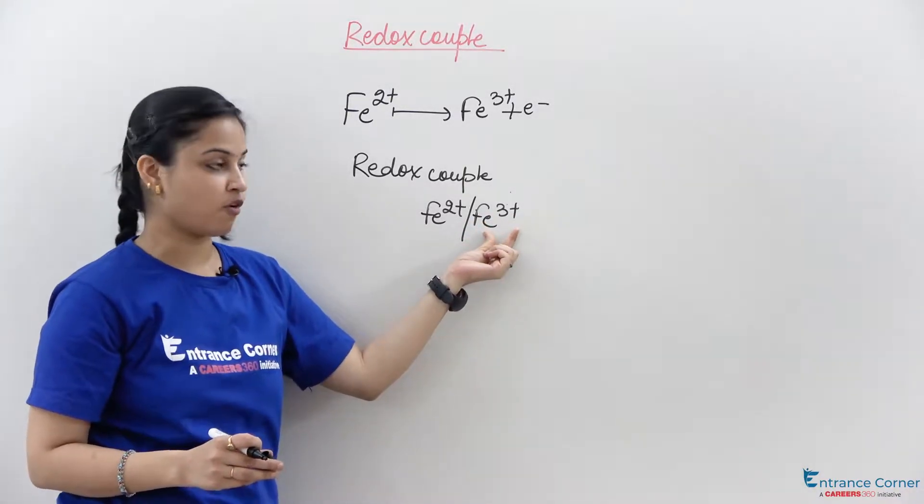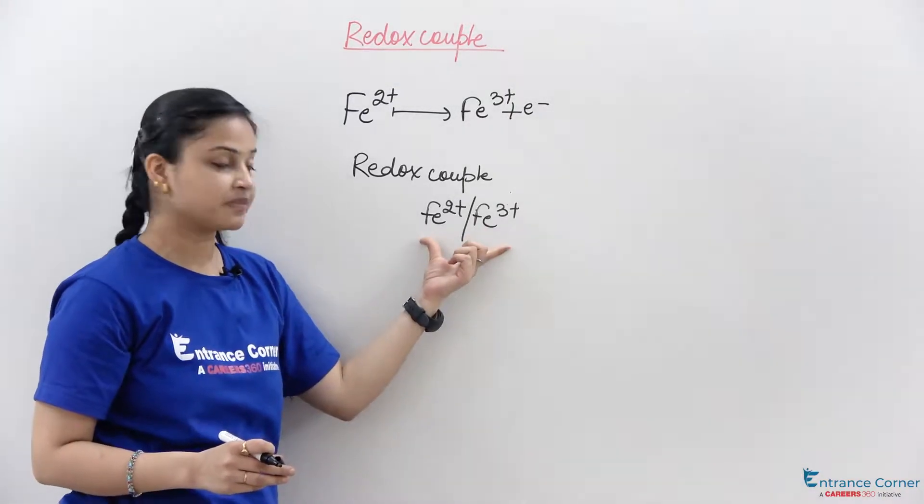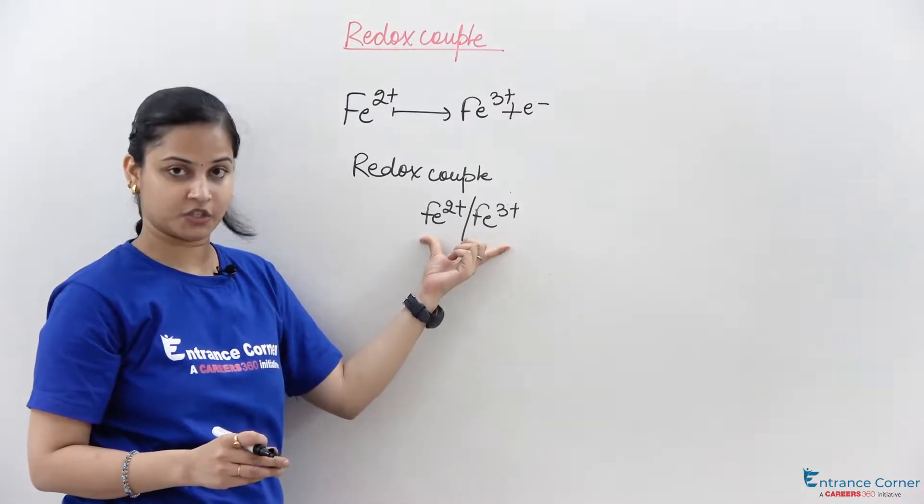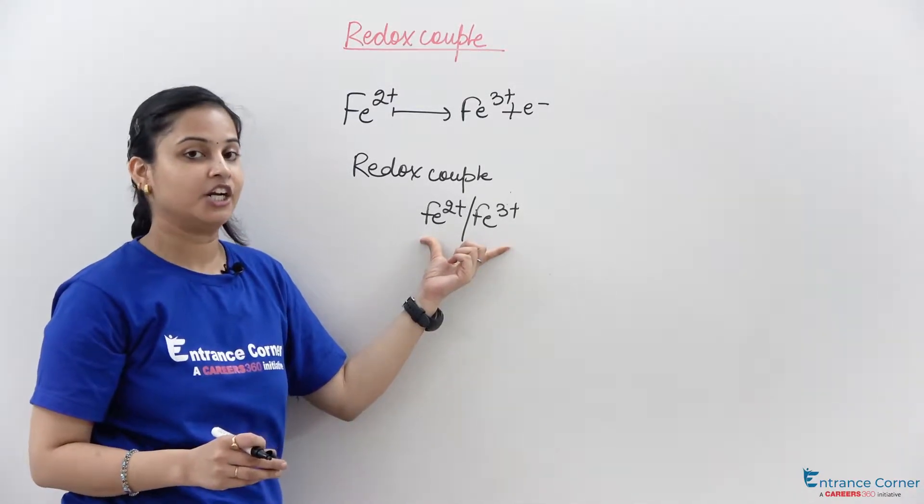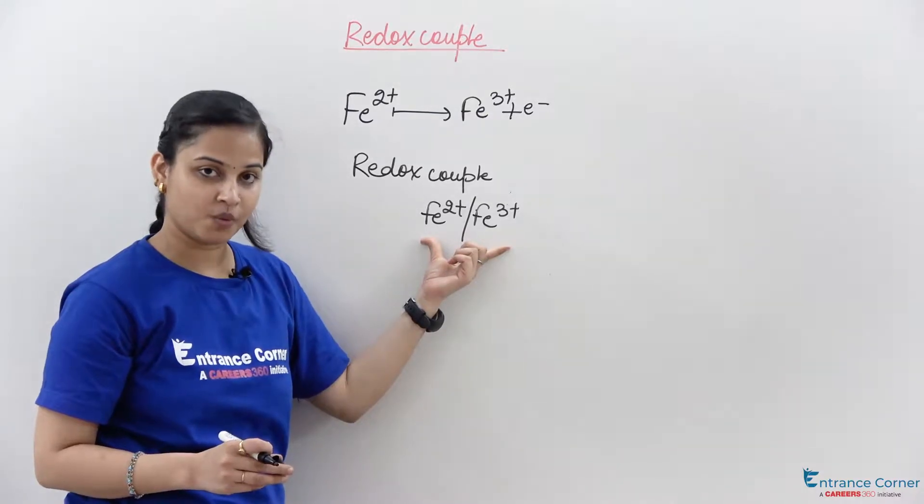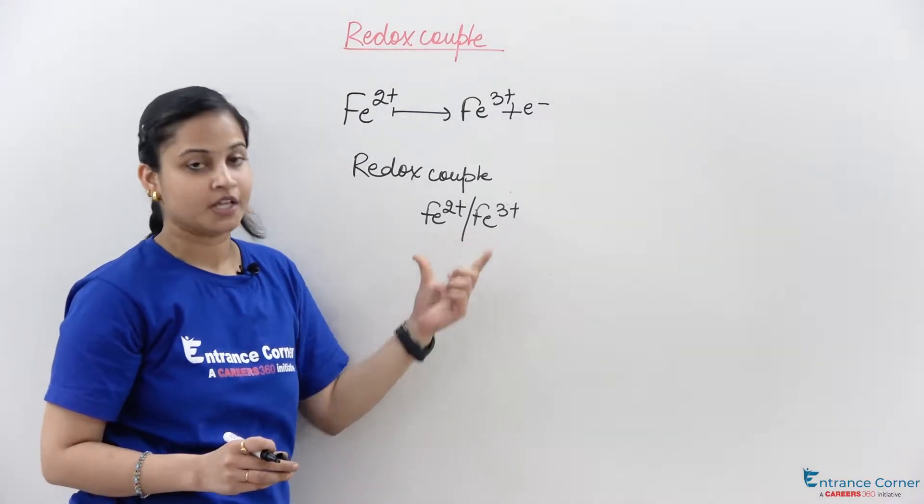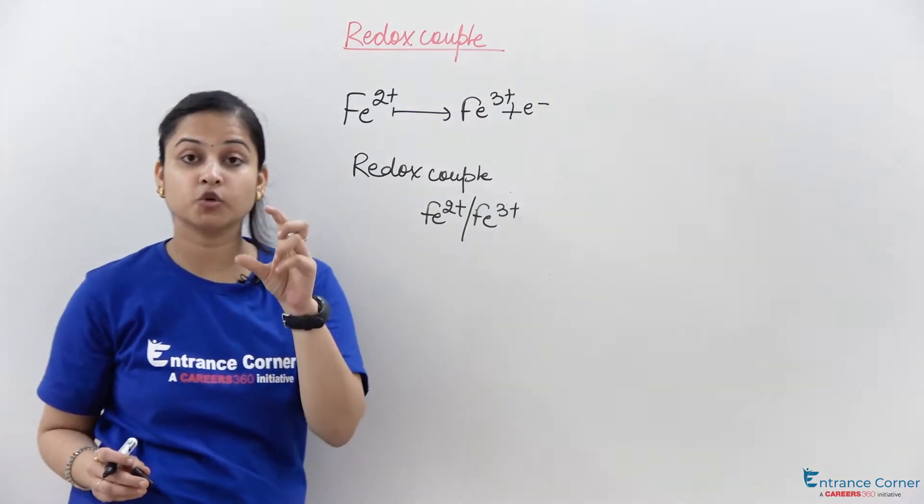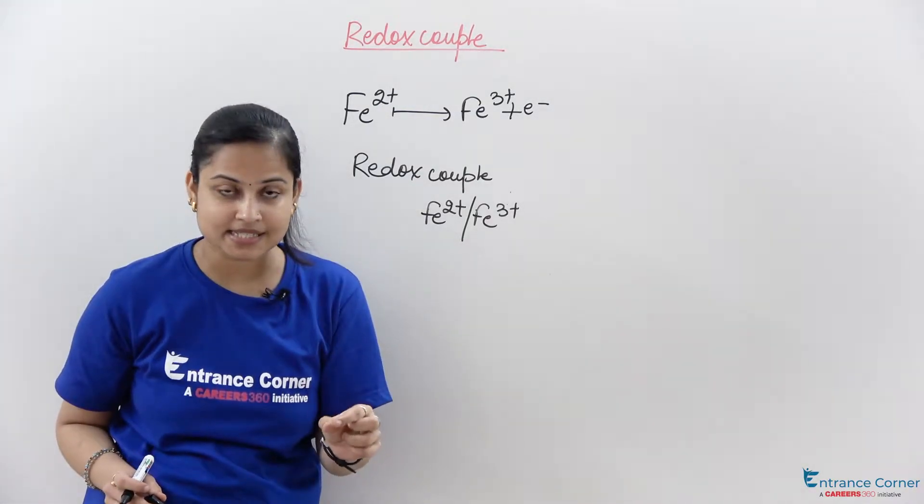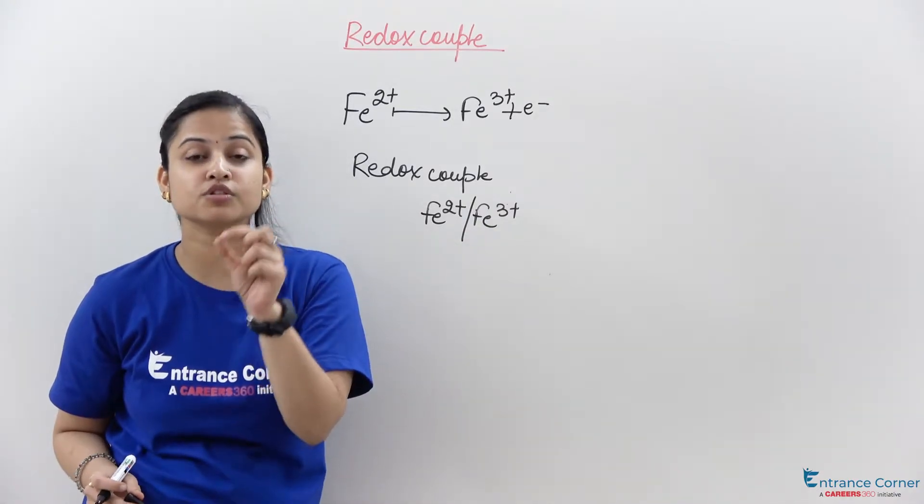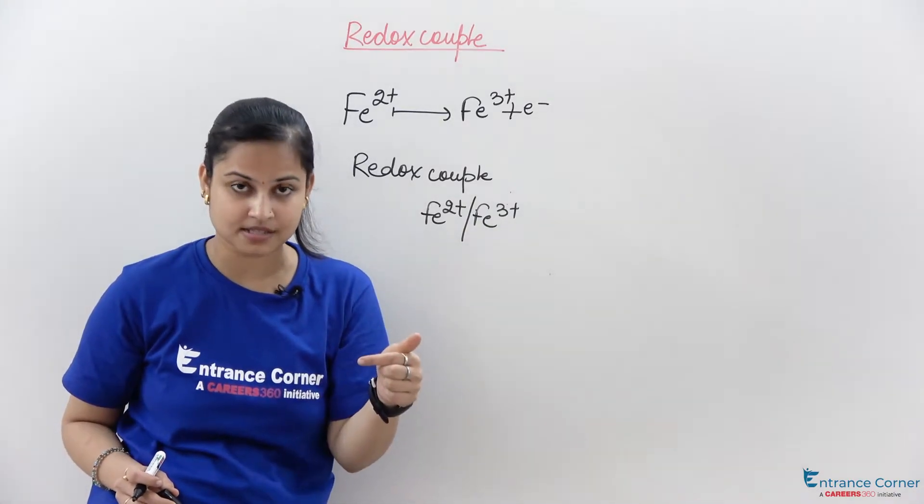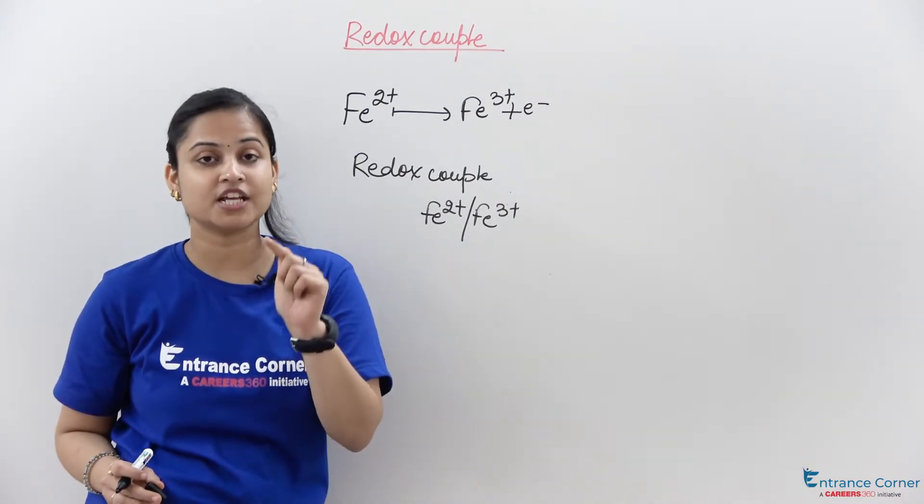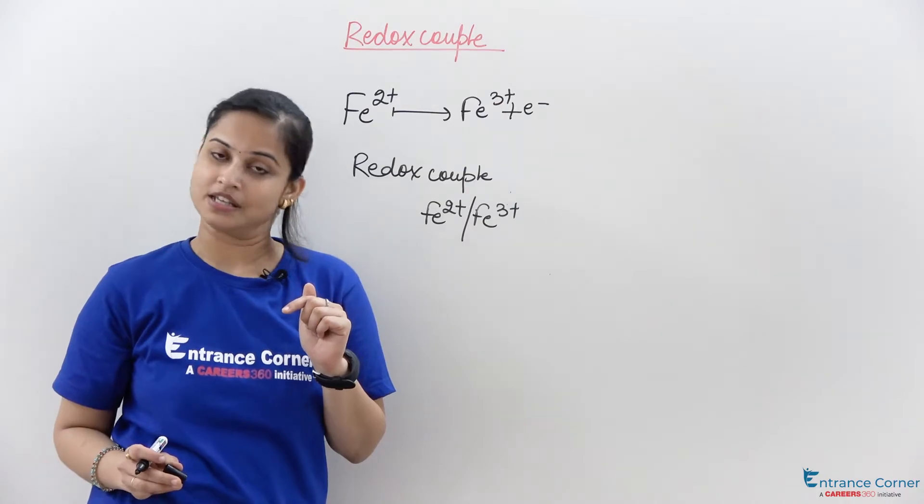So for any half reaction, the oxidized and reduced pair are known as redox couple. It can be defined as having together the oxidized and reduced form of a substance that is taking part in reduction or oxidation half reaction.